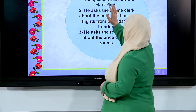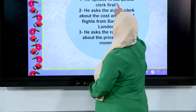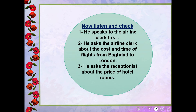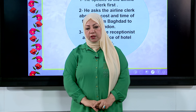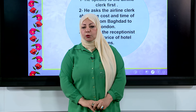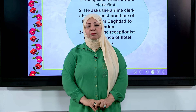To summarize: Tariq's father speaks to the airline clerk first. He asked the airline clerk about the cost and time of flights from Baghdad to London. Then he asked the hotel receptionist about the price of the hotel room. This concludes our lesson for today. Thank you for being with us, and special thanks to the whole staff and our supervisor Mr. Mustafa Karim. Goodbye.